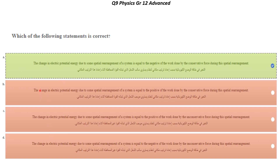Let's scan them first. The change in electric potential energy — delta U — due to some spatial arrangement of a system is equal to the negative of the work done by the unconservative force.